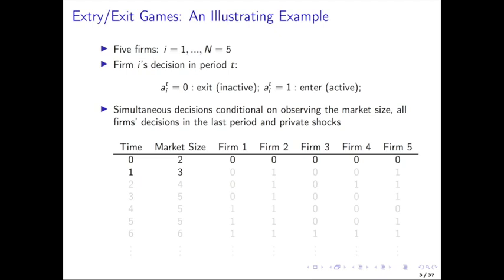The decision maker would observe their own idiosyncratic shock to investment before making the decision, and the econometrician doesn't observe that at all. But they do observe the common shocks. Given the state — which would be, for example, which of the firms were active in the market last period combined with the market size — then they make their decisions. The firms, when they make that decision, take expectations over what those private IID extreme value shocks are for all the other firms, and then they make a simultaneous decision all at once.